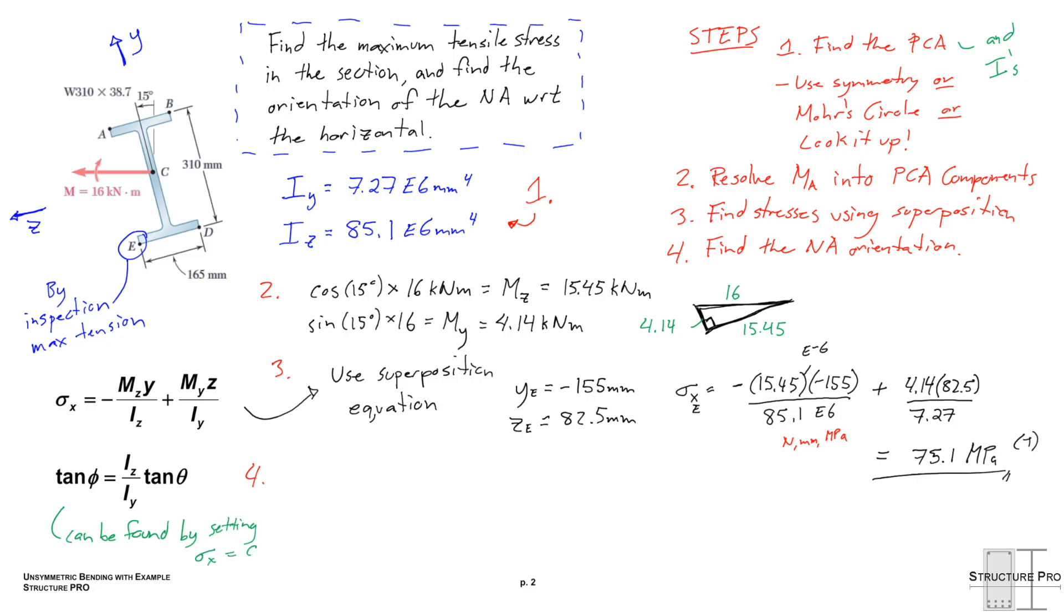So this equation shown here, this tan phi equation, it can be found by setting sigma x of the above equation to 0, and then you can derive that yourself. Try that at home. Anyways, I guess you're at home anyways. Try that where you are. Neutral axis orientation.